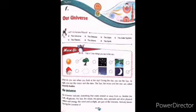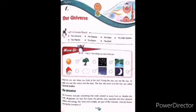The universe includes everything that exists around or away from us. It includes the earth, all galaxies, the sun, the moon, the planets, stars, asteroids, and other physical matter and energy like wind and sunlight — all are parts of the universe.